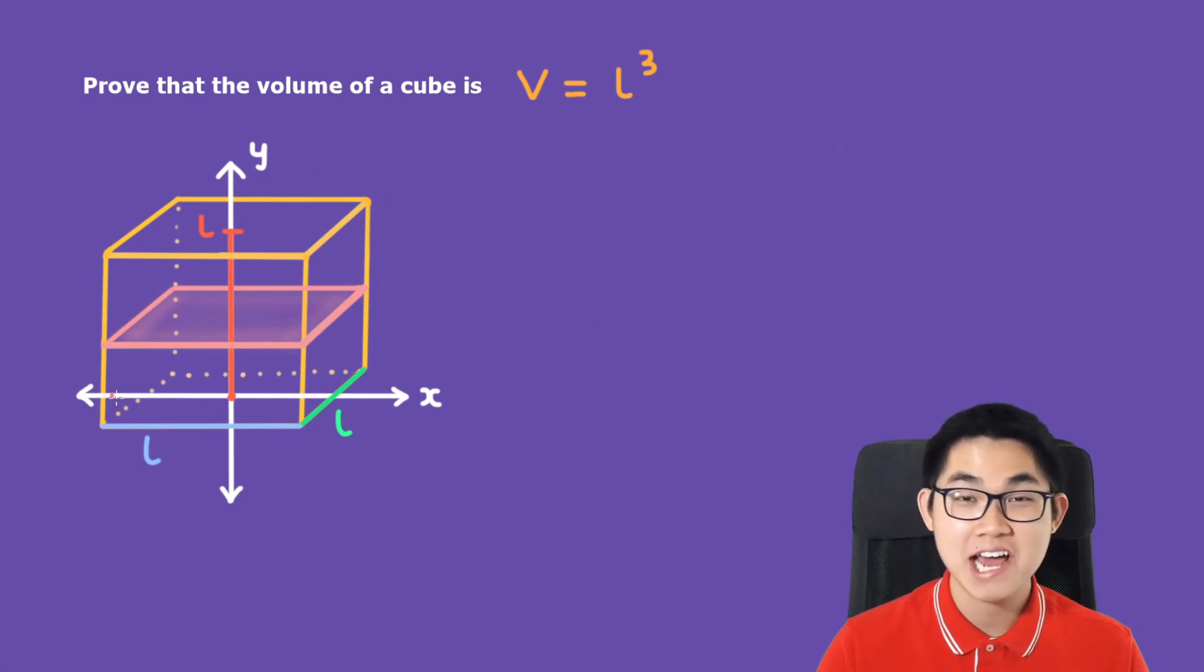So here I've drawn the diagram of a cube. It has the length of L and the width is also L because the size have to be the same, and therefore the height is also L.